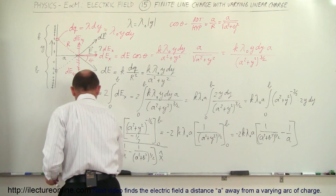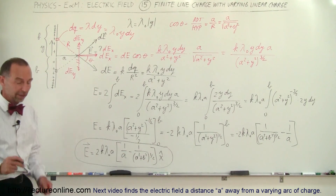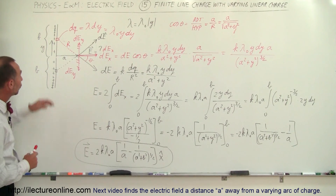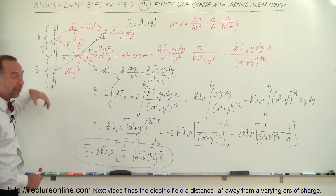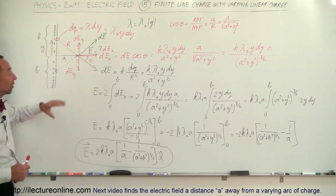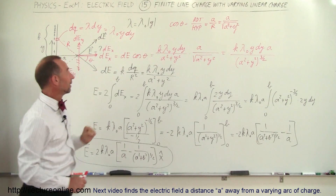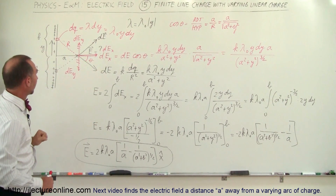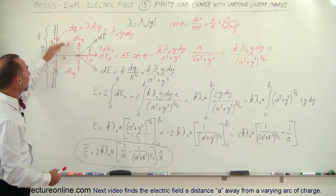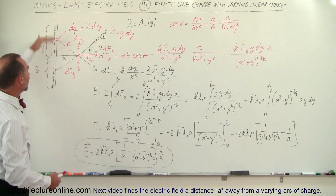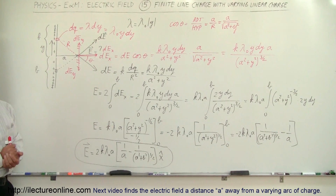That is the final result: the electric field due to a line segment with non-uniformly distributed charge, at a point perpendicular to and halfway along the line, is given by E = 2k lambda-sub-naught a times (1/a − 1/√(a²+b²)) in the positive x-direction. That's how we solve this problem.